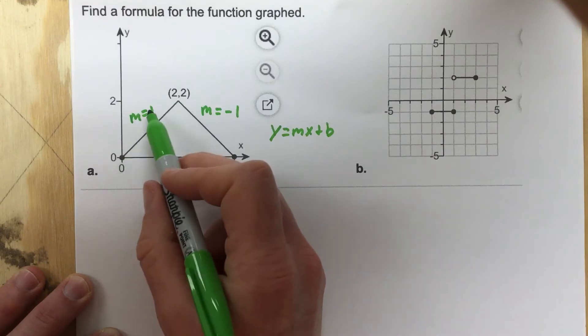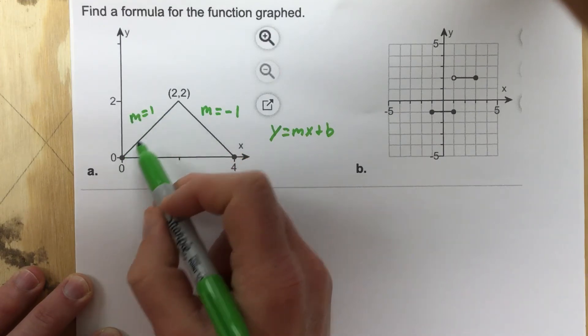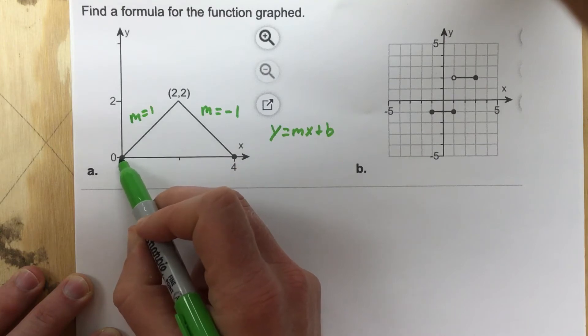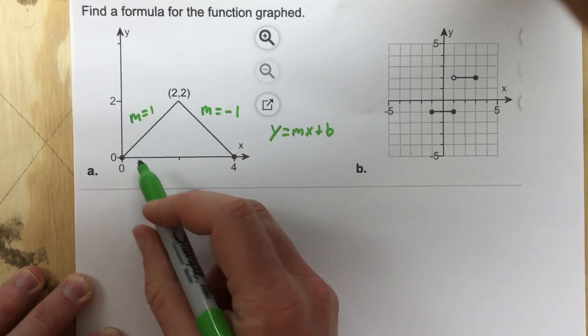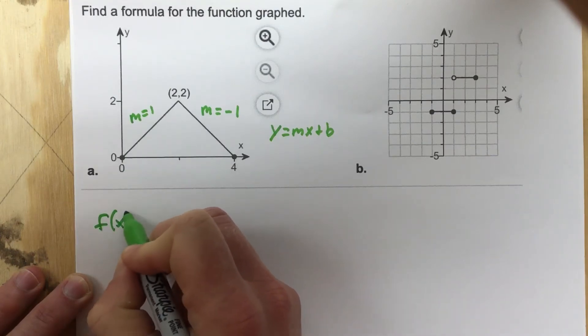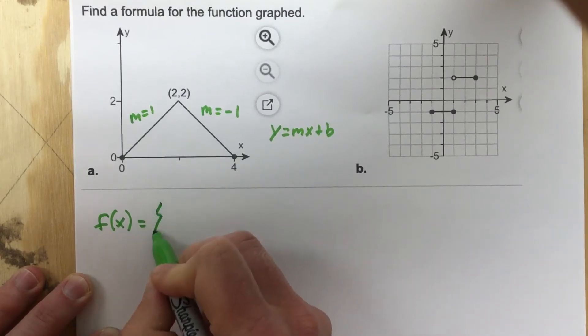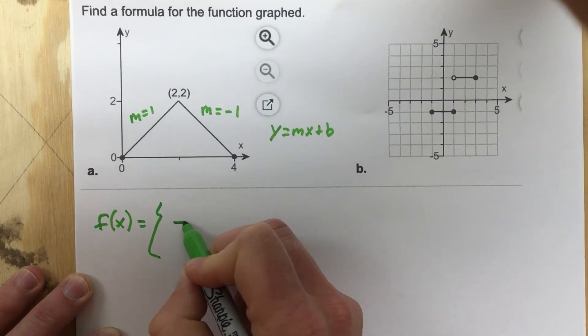When I go to write this out, the first line that I have crosses the y-axis at 0. So my equation for this, if I set this up as a piecewise function, is going to say f of x equals, and then I'll have, for the first function, I would have,